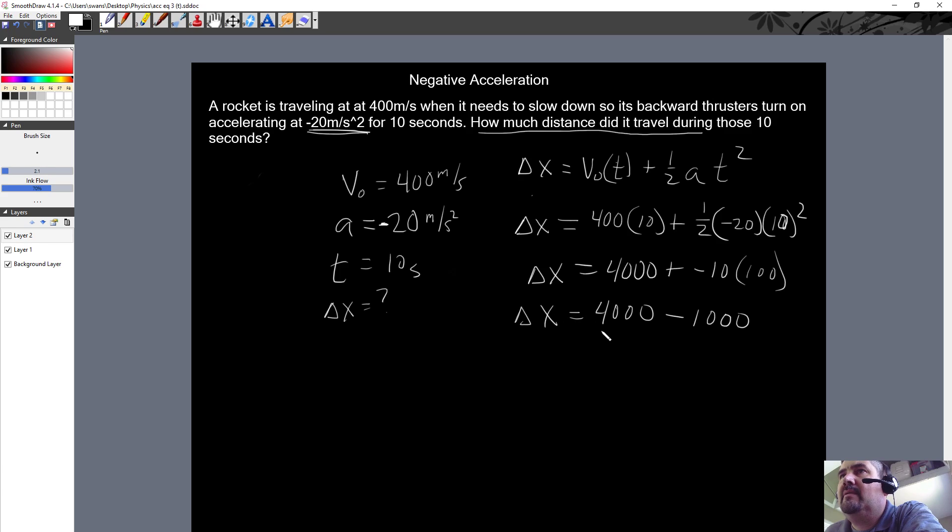And delta x becomes 3000 meters. That's our answer right there. That's done pretty much like that. The only difference from before is just that there's a negative in there because this thing was slowing down.